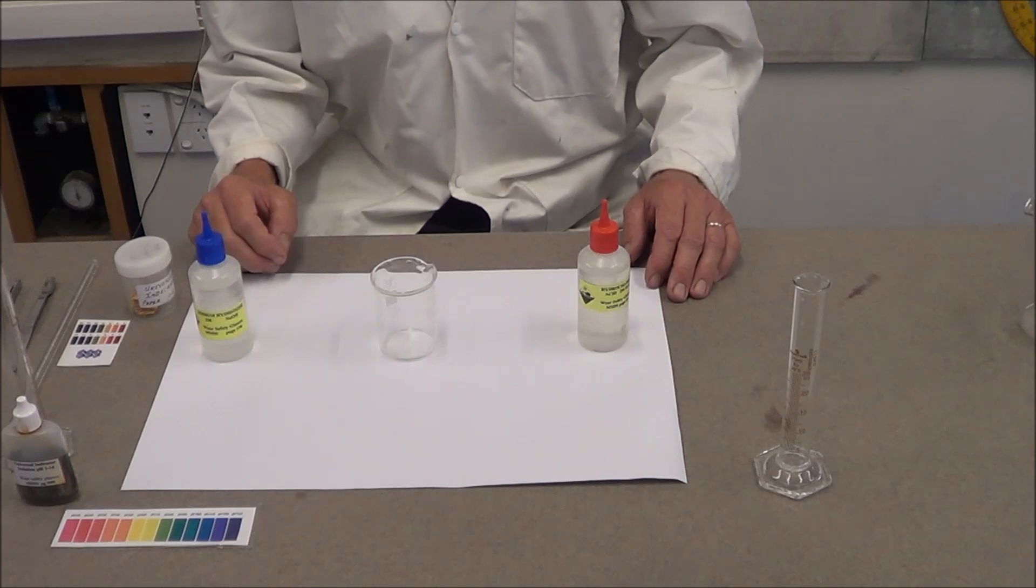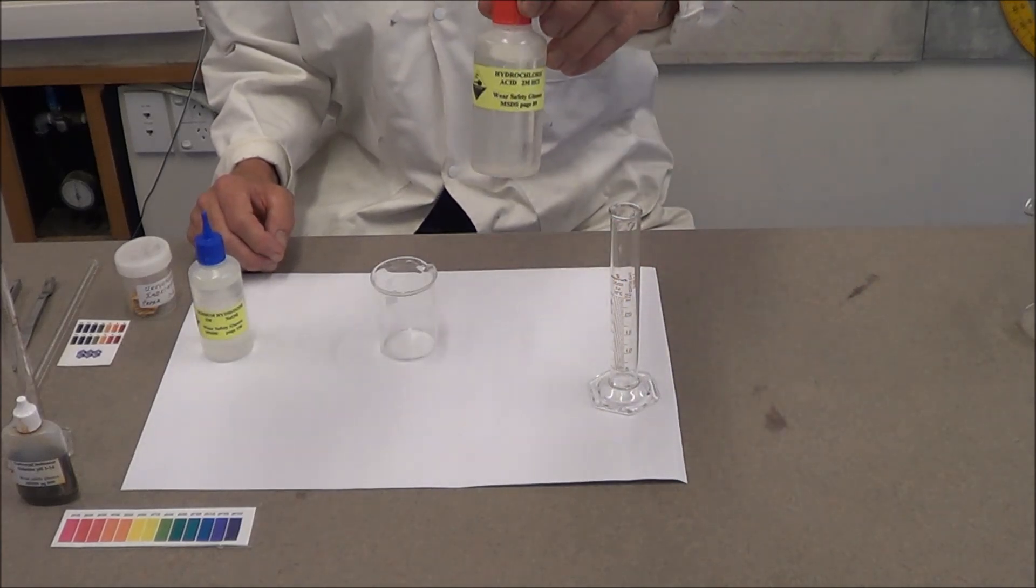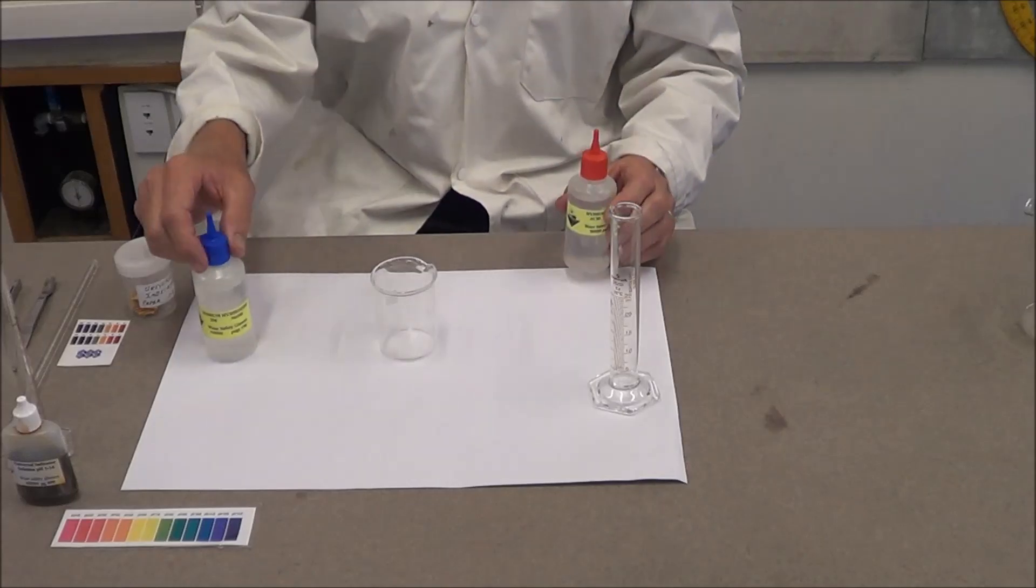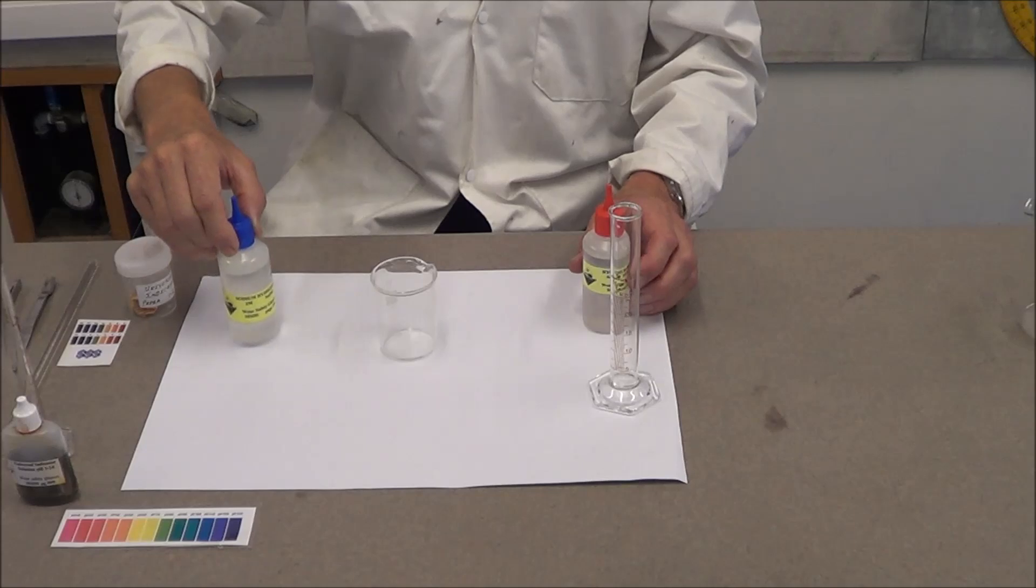We are going to neutralize 20 mL of hydrochloric acid using sodium hydroxide at both the same strength, 2 moles per litre.